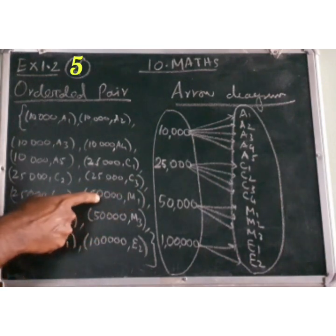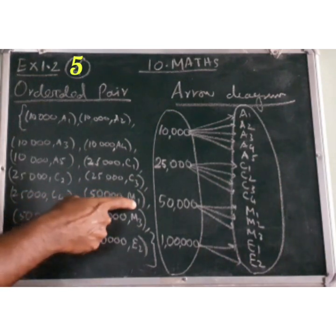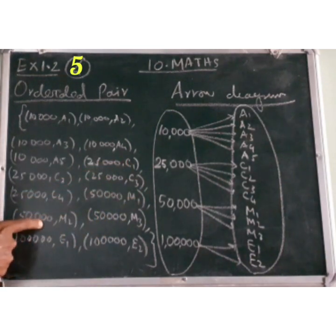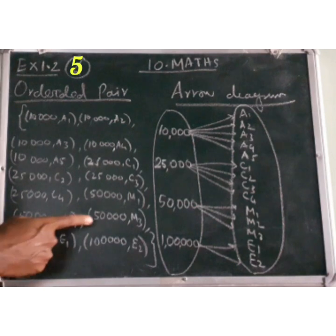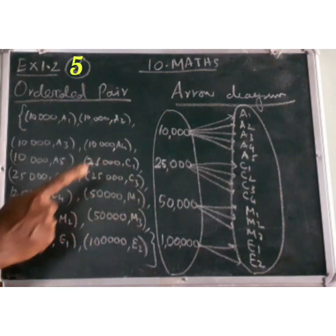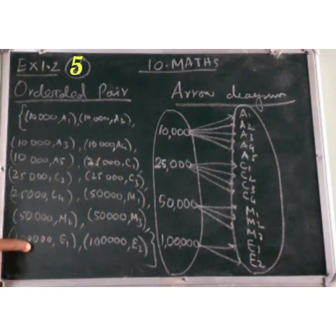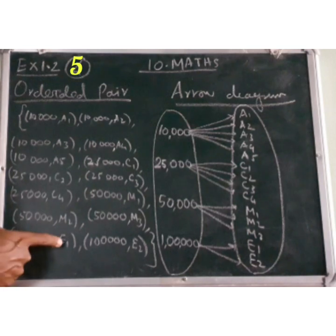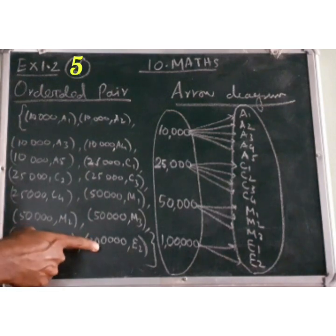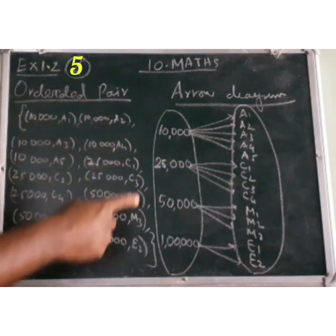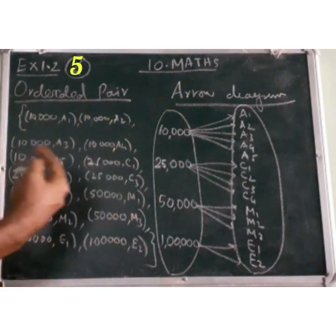Continuing the ordered pairs for Managers: (50,000, M1), (50,000, M2), (50,000, M3). And for Executive Officers: (1 lakh, E1), (1 lakh, E2). So this is the complete set of ordered pairs.